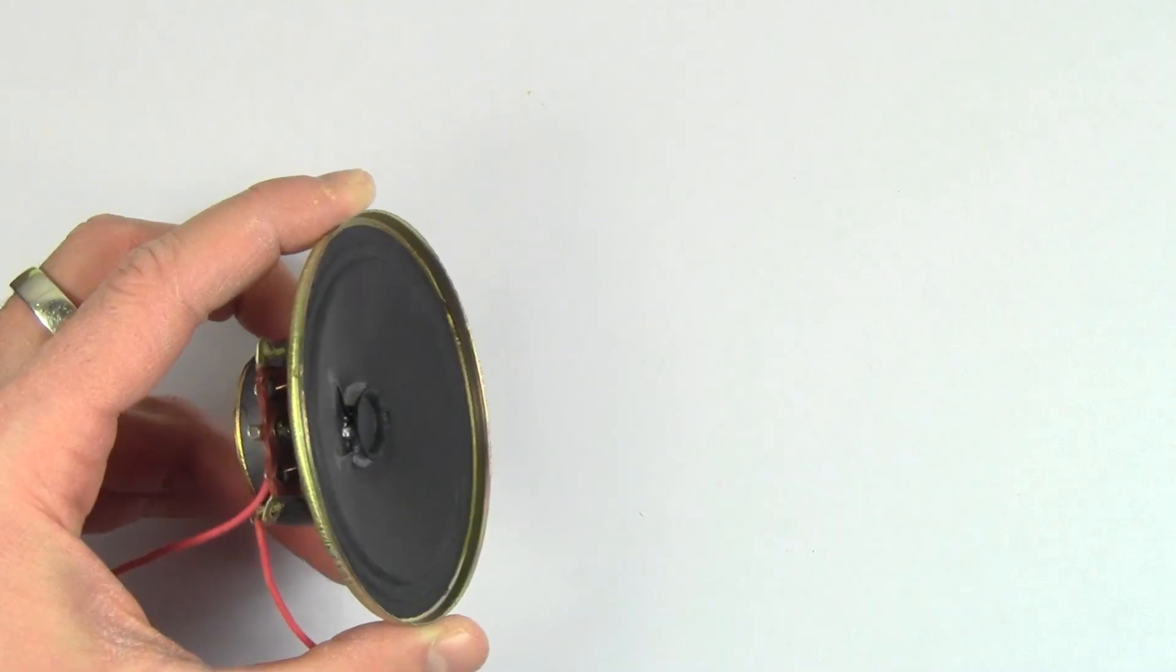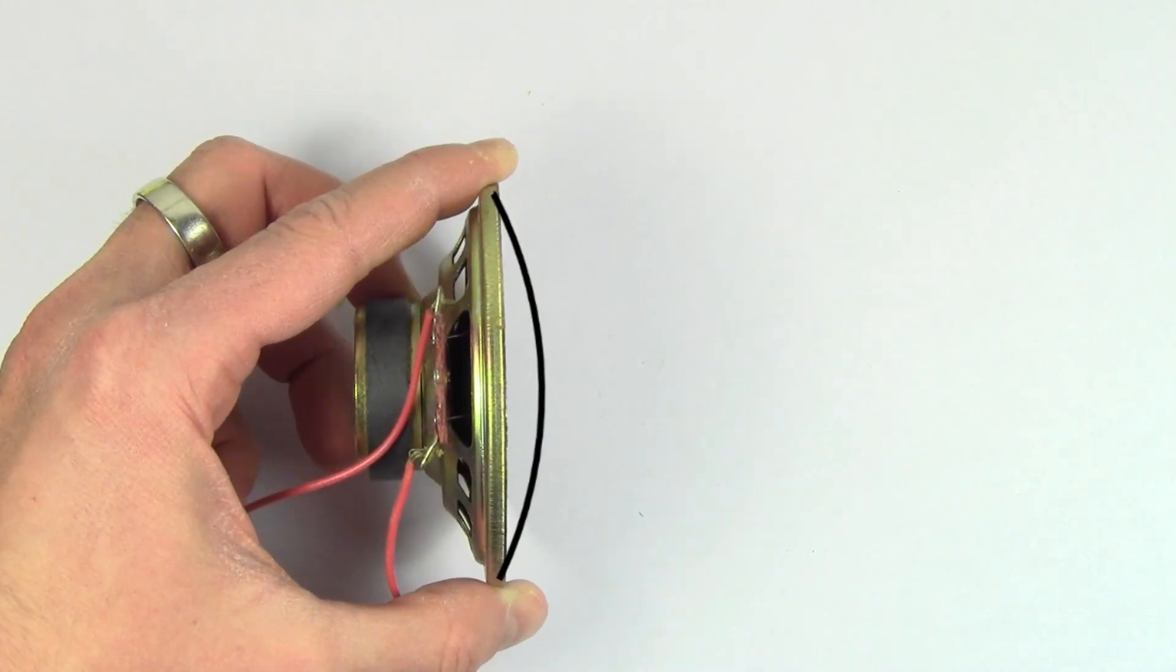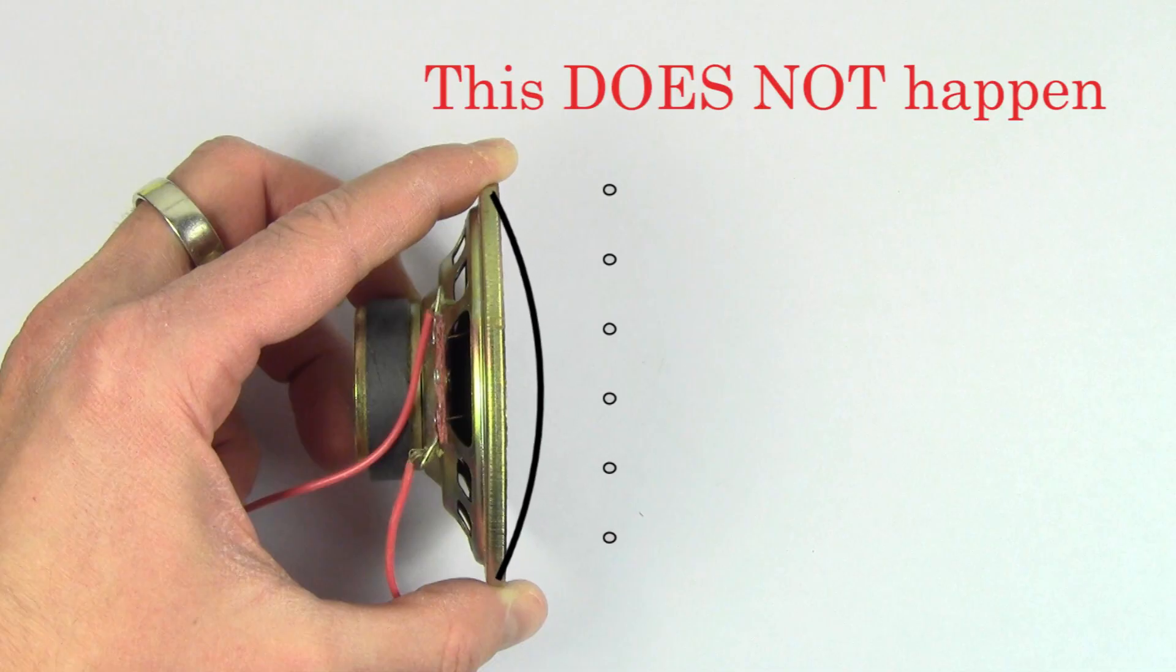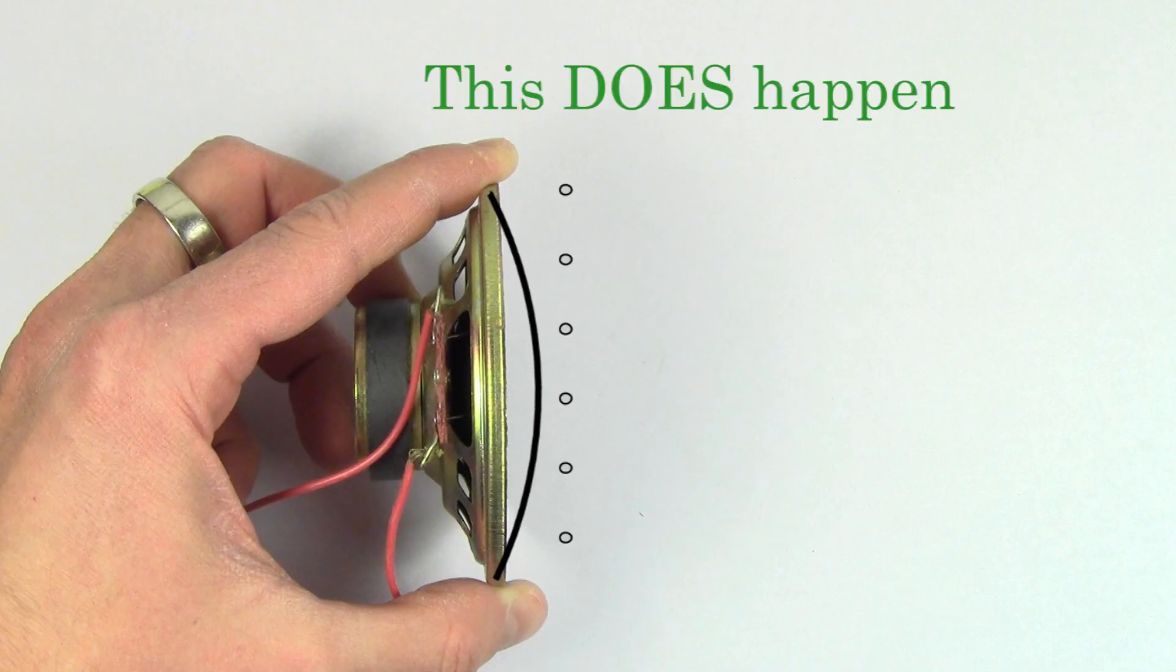The oscillation of the diaphragm will also cause the air in front of the diaphragm to move back and forth. But here's the interesting thing. The air in front of the diaphragm doesn't actually travel away from the speaker. The air molecules in front of the speaker just oscillate back and forth.